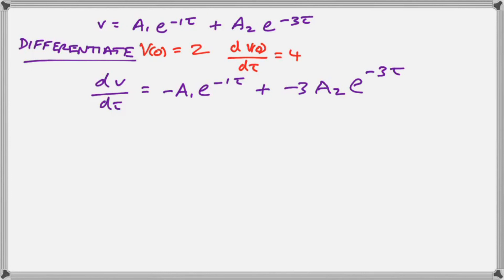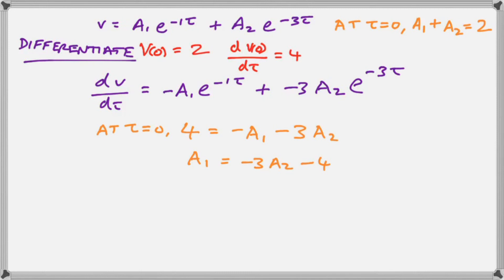So what we end up with is two equations, a1 plus a2 is equal to two. And we end up with four equals minus a1 minus 3a2. And we rearrange that so that the subject of that is a1. And we plug it into the other equation.